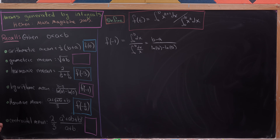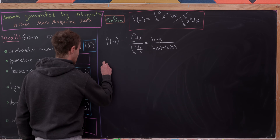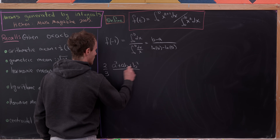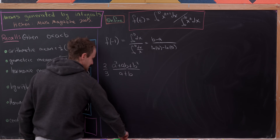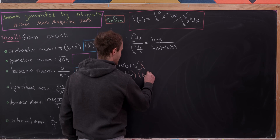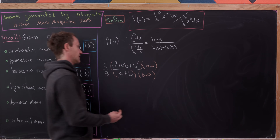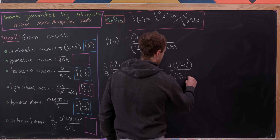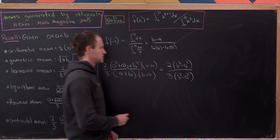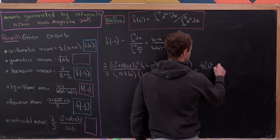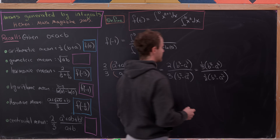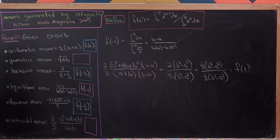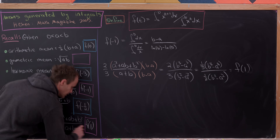Now let's look at the centroidal mean: (2/3)(a² + ab + b²) / (a + b). Multiplying numerator and denominator by (b - a) gives 2(b³ - a³)/3 in the numerator and (b² - a²) in the denominator. Rewriting that as (1/3)(b³ - a³) over (1/2)(b² - a²), it becomes clear this equals f(1).